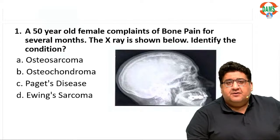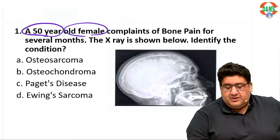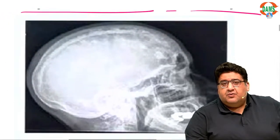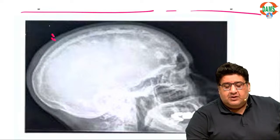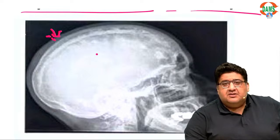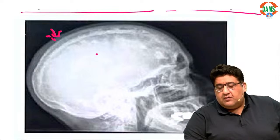If you see the first question, a 50-year-old female — very classical — complains of bone pain for several months, X-rays shown below, identify the condition. If you see this X-ray, they have shown you a very peculiar kind of skull — a thick outer table of the skull — and not only the thick outer table, you can see some cotton wool spots also.